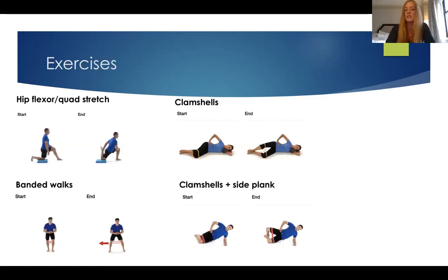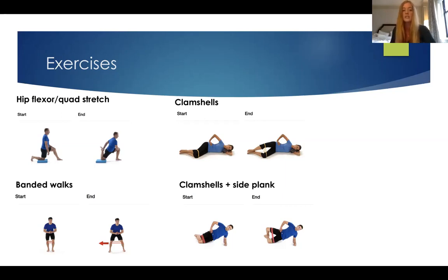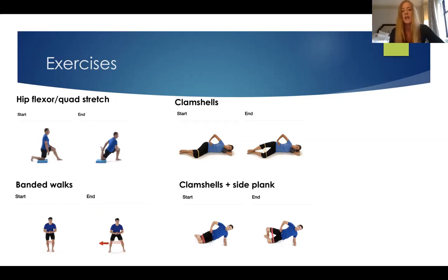These exercises come from a program called Physiotec. The first, in the top left corner, is a hip flexor and quad stretch — for the muscles on the front of your hip and thigh. It's a nice warm-up to gain mobility. Clamshells are a very common clinic exercise targeting the glute medius, which is important for stabilizing the pelvis and preventing the knee from dropping inward. A progression is adding a side plank with it, getting some core engagement with the glute activation.